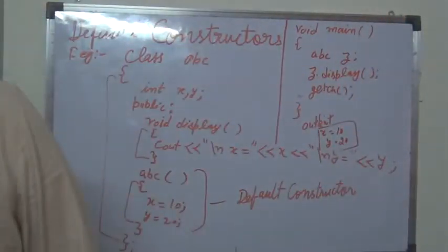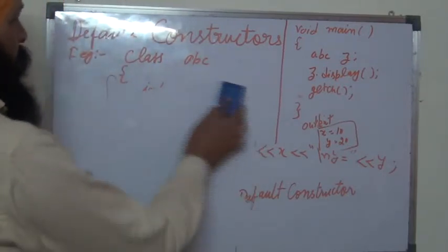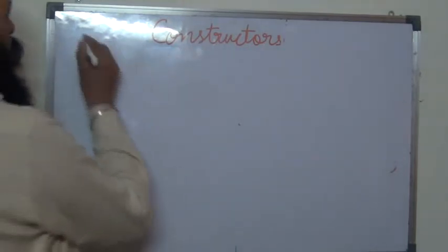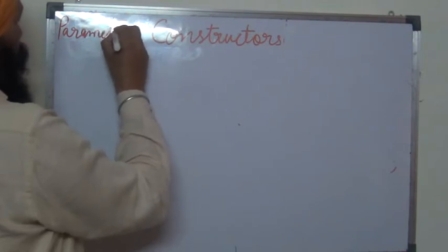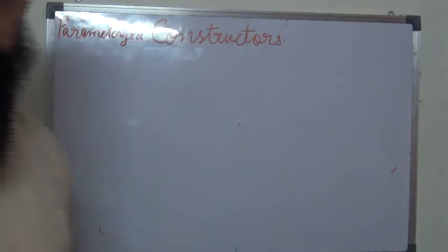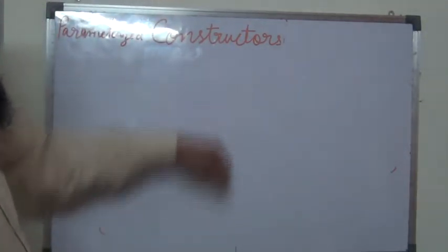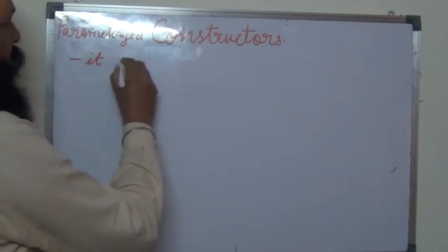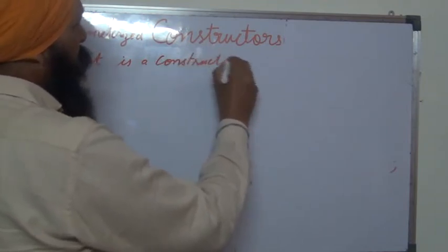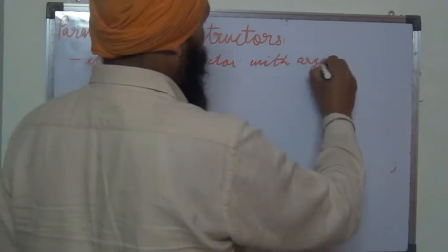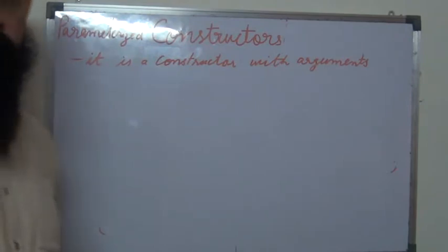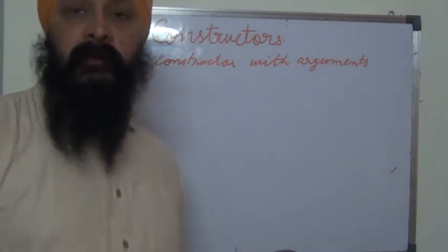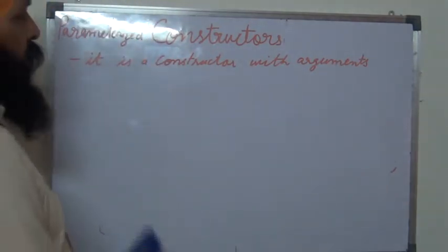That is the concept of the Default Constructor, which is used to initialize the values of the data members of the class for a particular object. Now we will discuss the Parameterized Constructor. In a Parameterized Constructor, we can supply arguments, allowing us to give different values to different objects.